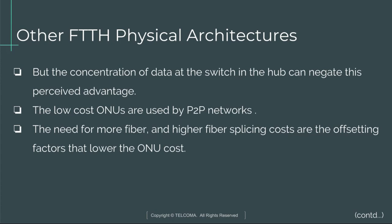But the concentration of data at the switch in the hub can negate this perceived advantage. The low-cost ONUs are used by P2P networks. The need for more fiber and higher fiber splicing costs are the offsetting factors that lower the ONU cost.